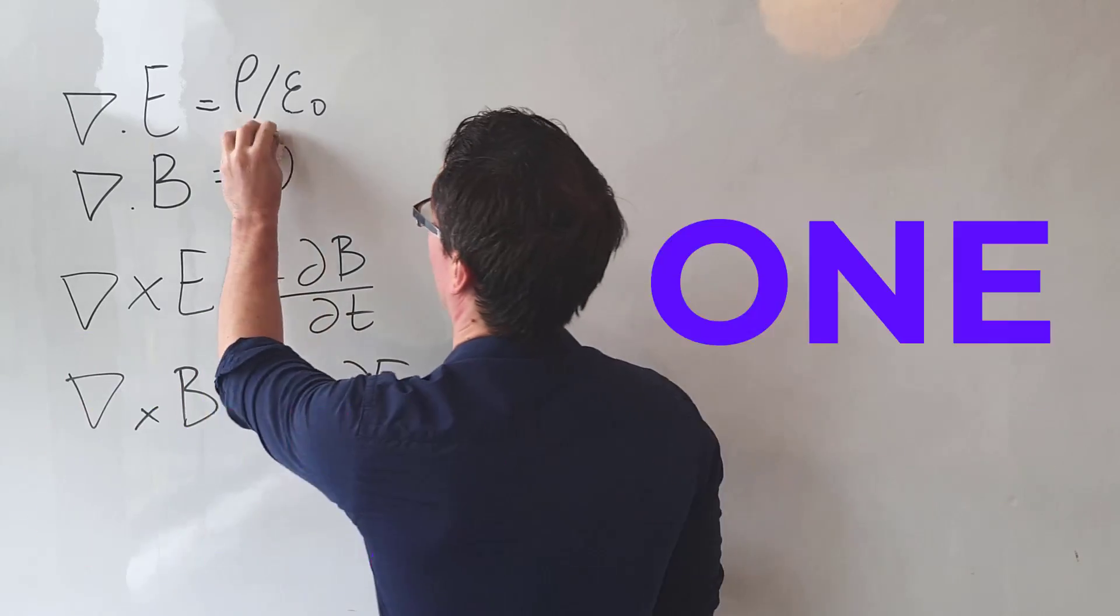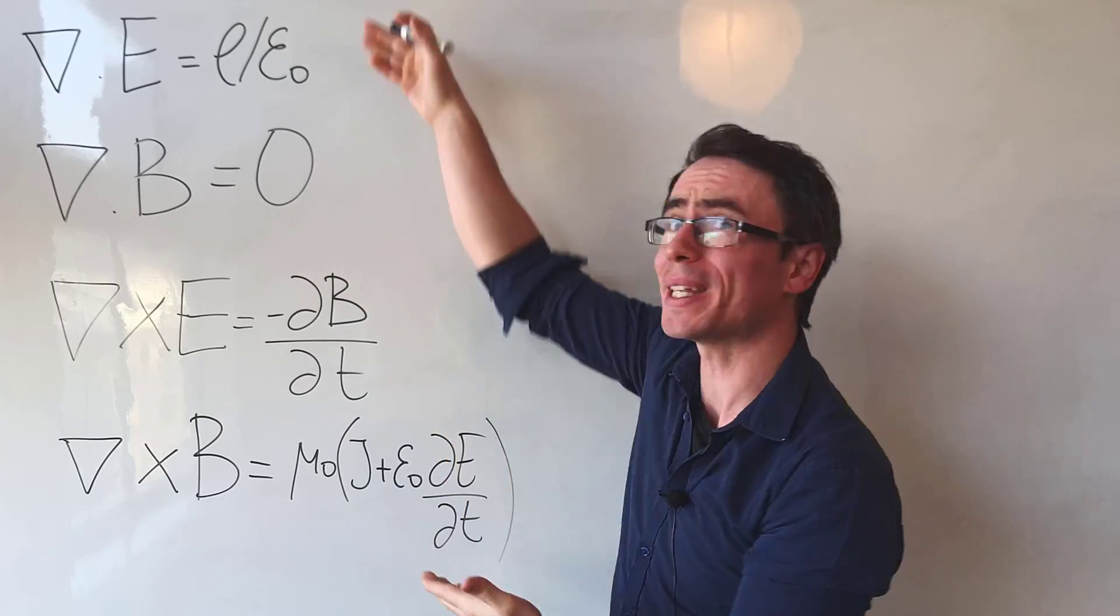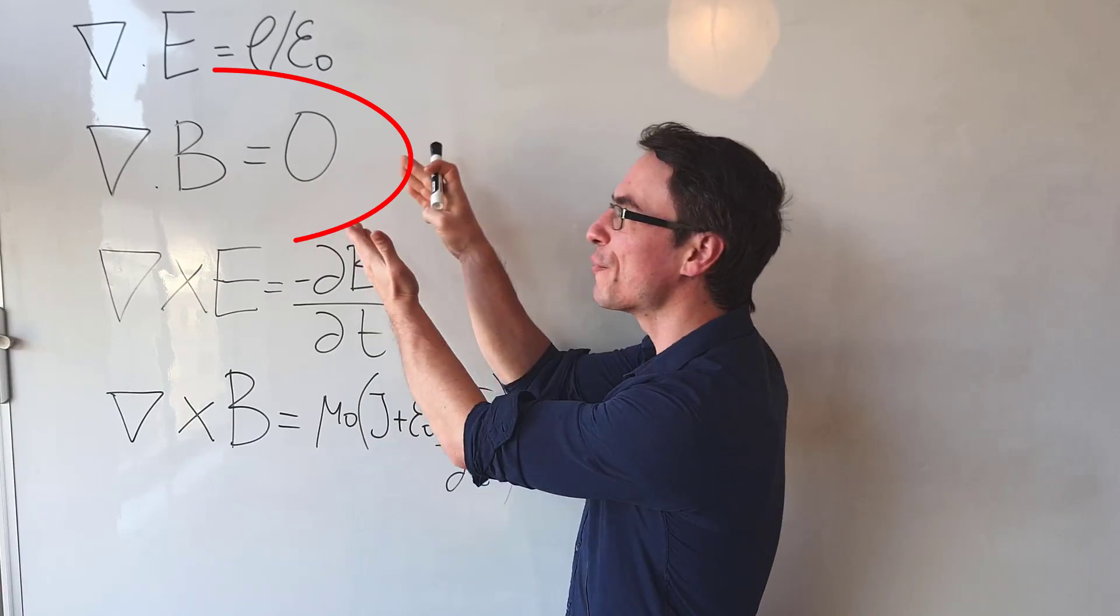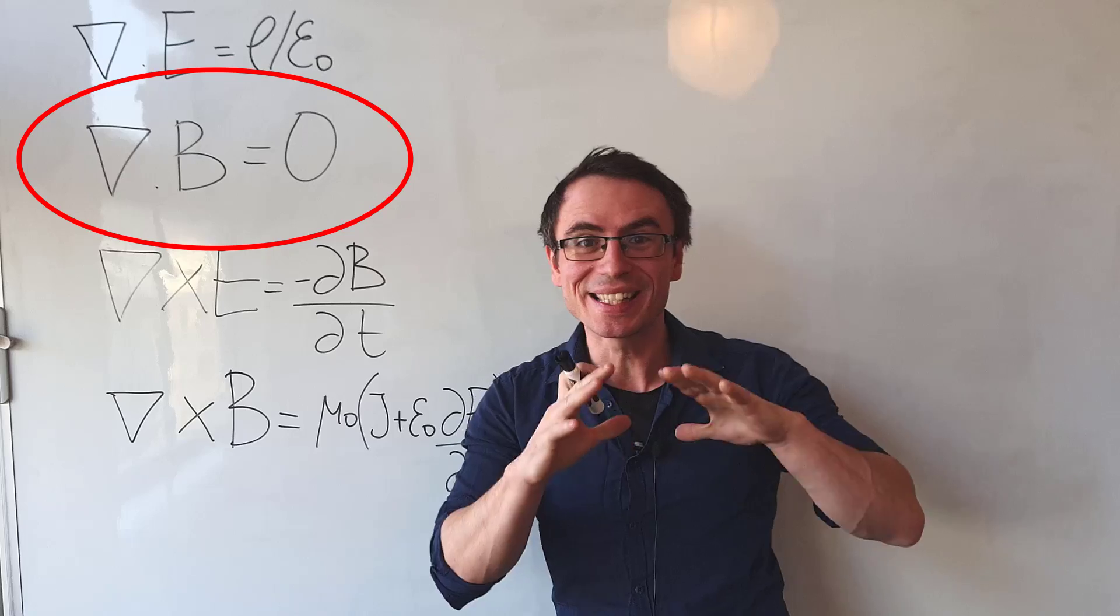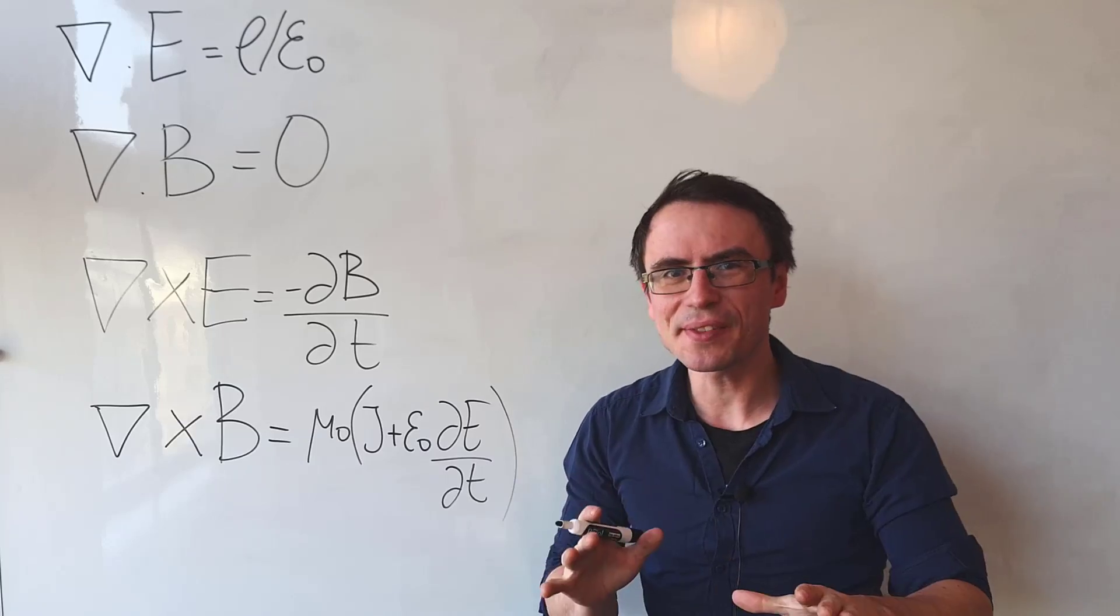One day we may need to change one of Maxwell's equations. Notice a little asymmetry between those two equations? The divergence of the magnetic field is zero, unlike the electric field. Let's investigate this further.